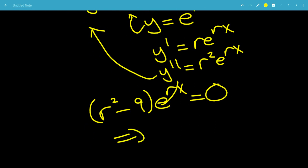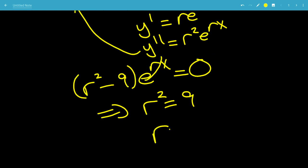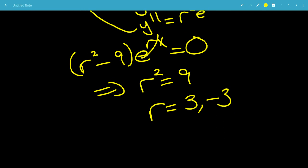And everybody knows that e to the rx is not equal to 0 ever. So that means that r squared equals 9, which means that r is 3, negative 3. So that can be r1, r2.